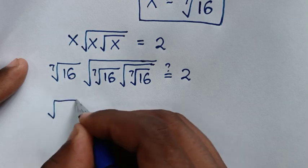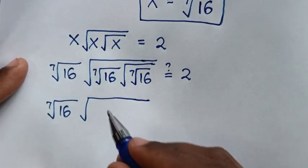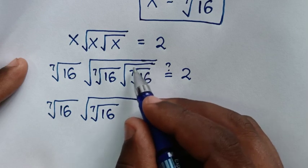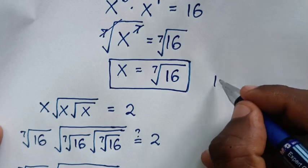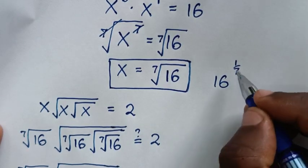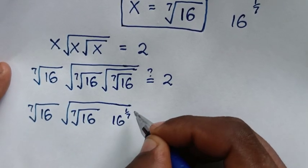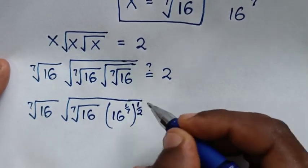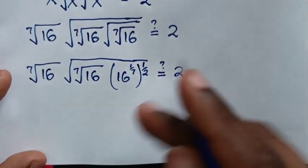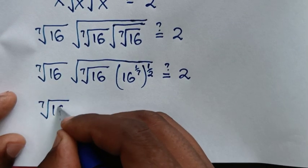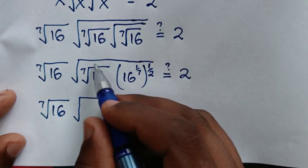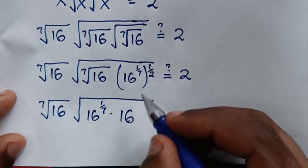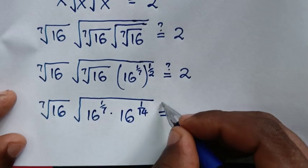From here it will be 7th root of 16, then square root of 7th root of 16. Now the 7th root of 16 is the same as 16 power of 1 over 7. Remember this was under a square root, and square root is the same as power of a half. So it becomes 16 power of 1 over 7, times 16 power of 1 over 7 times one half, which is 1 over 14.